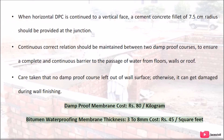Damp proof membrane cost: 80 kg bitumen waterproofing membrane, thickness 3 to 8 mm, costs approximately 45 per square foot.